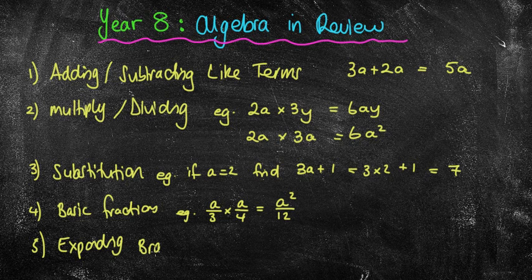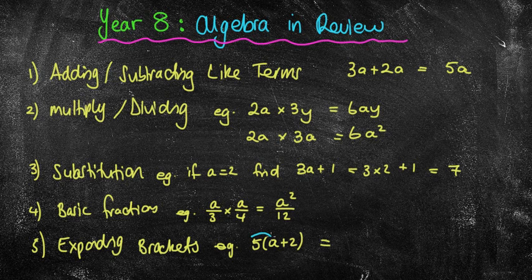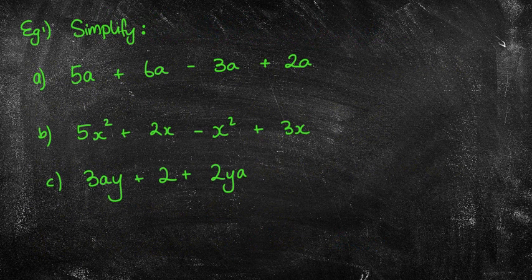We're also going to be looking at expanding brackets. For example, 5 outside of (a + 2): remembering that we times what's inside by the number out front, so 5 times a is 5a and 5 times 2 makes 10. These are the five things we'll be revising in this video, then you'll be having a crack at the 2014 past paper. Remember to pause the video, try the questions, then press play to check your answers.